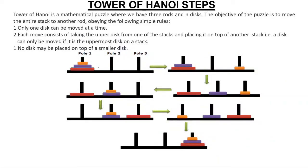There are a few constraints. One constraint is that you have to move one disc at a time — you cannot move more than one disc at a time. And second, you cannot place a bigger disc on a smaller disc. You can place a smaller disc on top of a bigger disc, but you cannot place a bigger disc on a smaller disc.